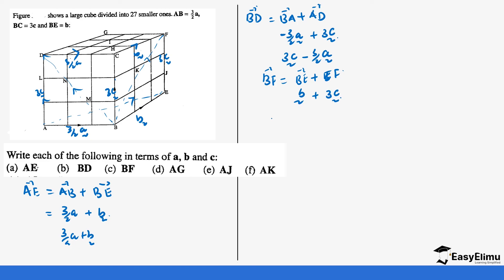For AG, we are moving from A to G, so we go A to D, then D to G. So AG = AD + DG. AD is 3c and DG is b - it's the same as b. So AG = 3c + b.